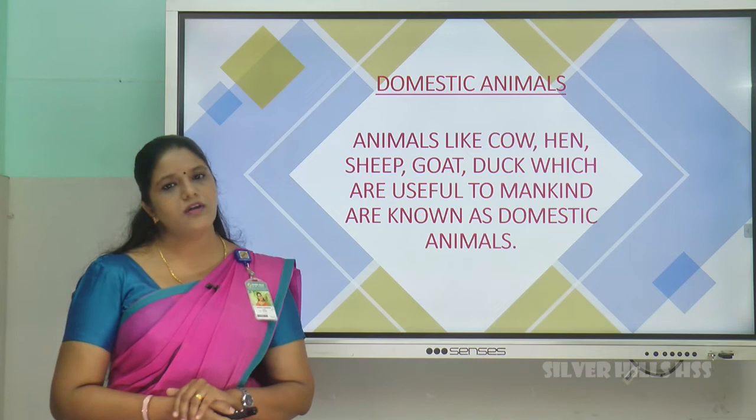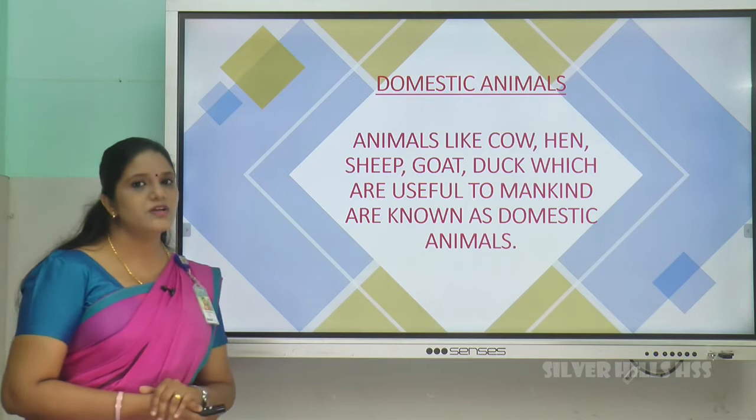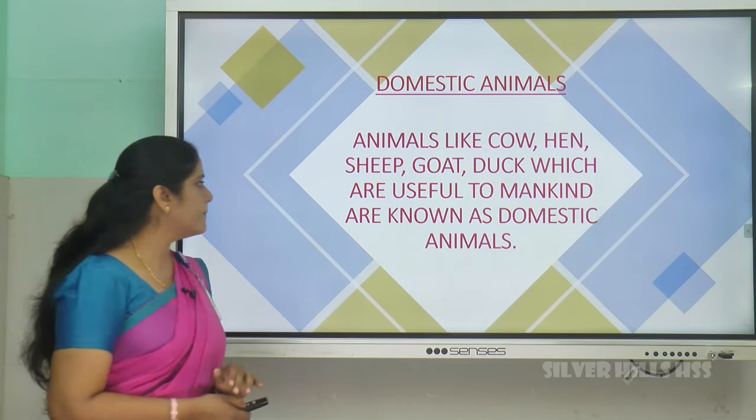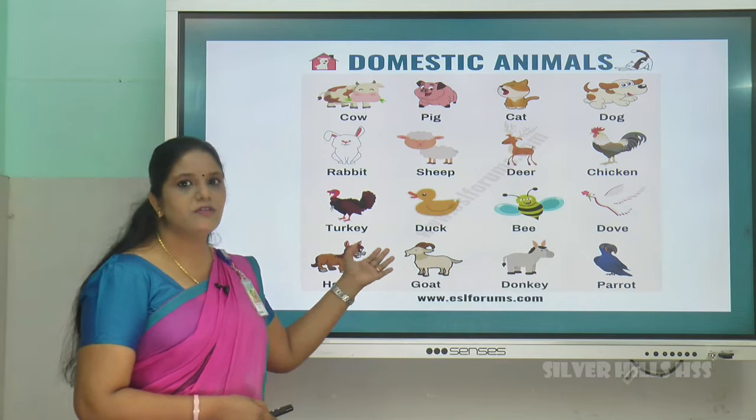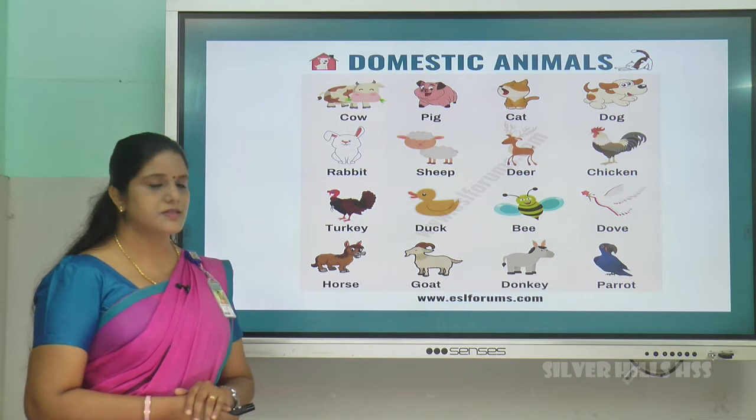Next, domestic animals. What are domestic animals? Domestic animals are also called farm animals. Animals like cow, hen, sheep, goat, duck — which are useful to mankind — are known as domestic animals. We keep these animals in our homes for particular needs. These are the pictures of domestic animals.